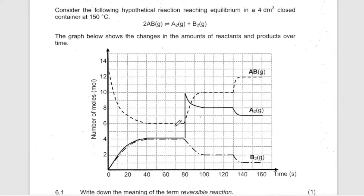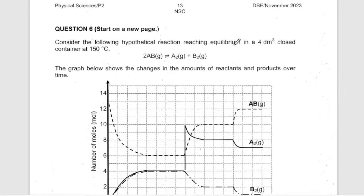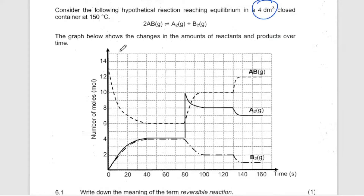Chemical equilibrium was very simple and easy to interpret. For those who watched my prediction, I gave you a question which is almost exactly the same. Consider the hypothetical reaction — the volume is very important, it's a closed system container. The graph below shows the change in the amount of reactant and product over time.